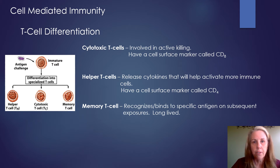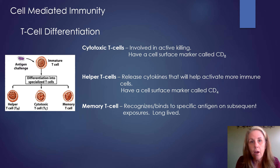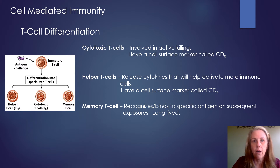The next type is called a helper T cell. Their job is to release cytokines. Cytokines are molecules produced by immune cells that act on other types of immune cells. Overall, what helper T cells do is help activate other lymphocytes — other T cells and B cells. Helper T cells have a cell surface marker called CD4, so sometimes helper T cells are referred to as CD4 cells because of that.